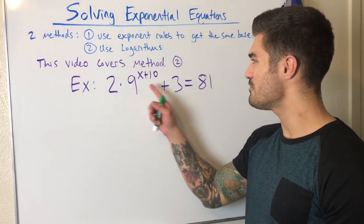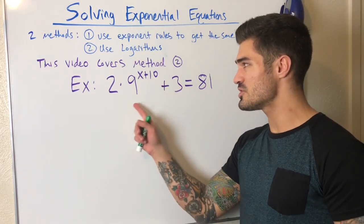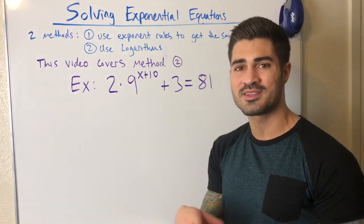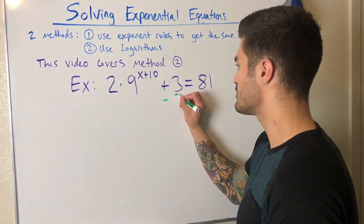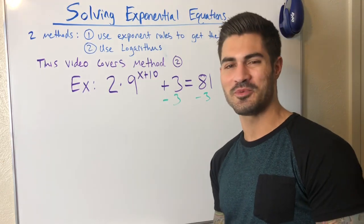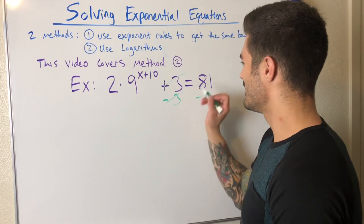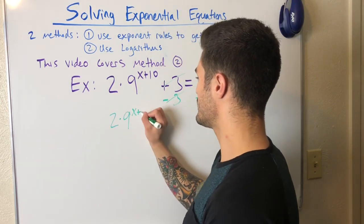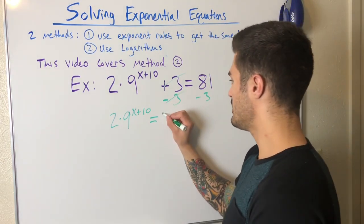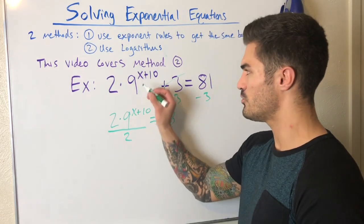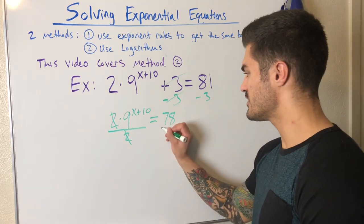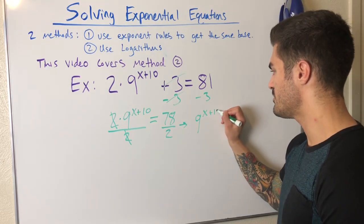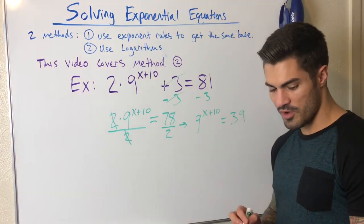Next example: X is again in the exponent of one number. Same process — I'll subtract 3 from both sides and then divide by 2 to isolate the base so I can take log base 9 of both sides. Subtracting 3 from both sides gives 2 times 9 to the X plus 10 equals 78. Dividing both sides by 2 gives 9 to the X plus 10 equals 39.